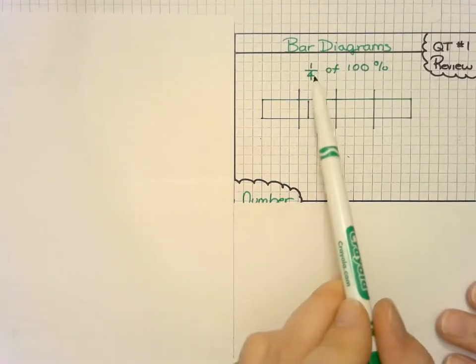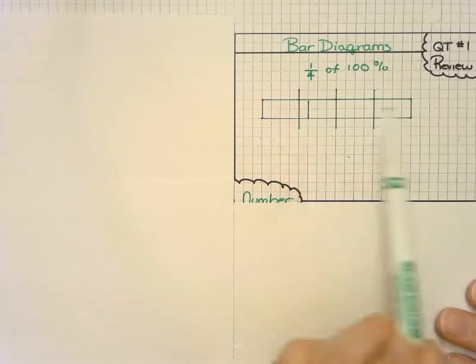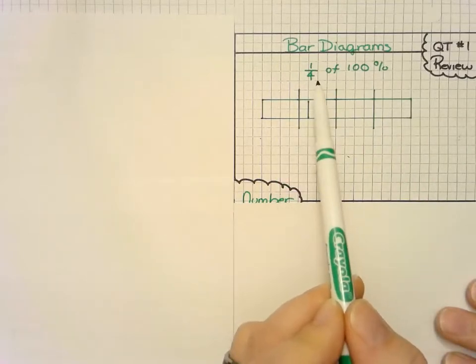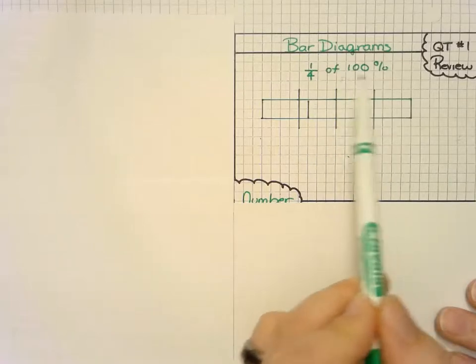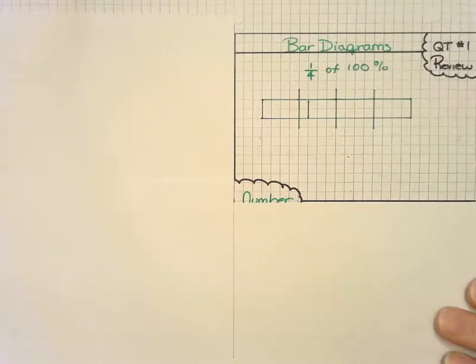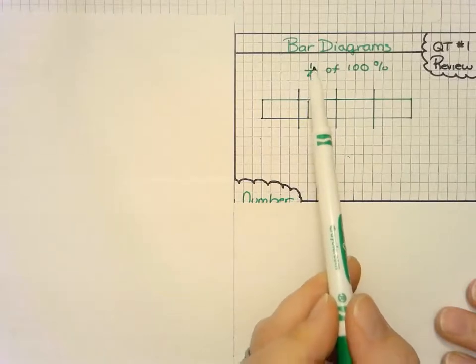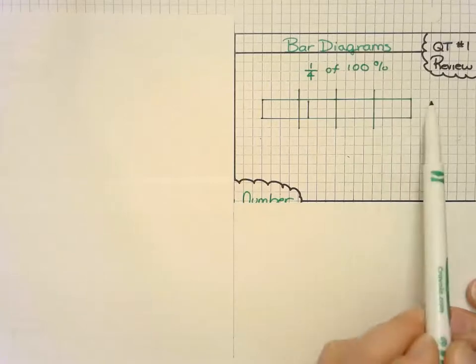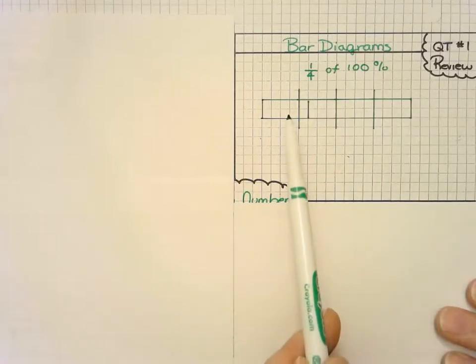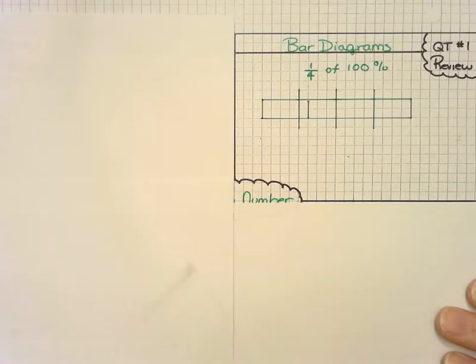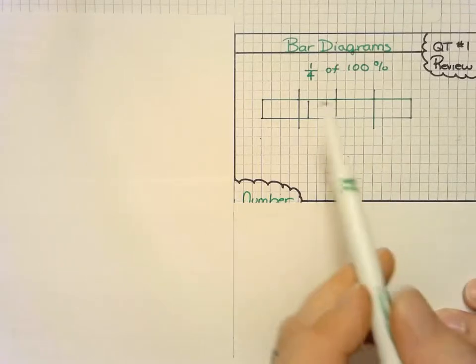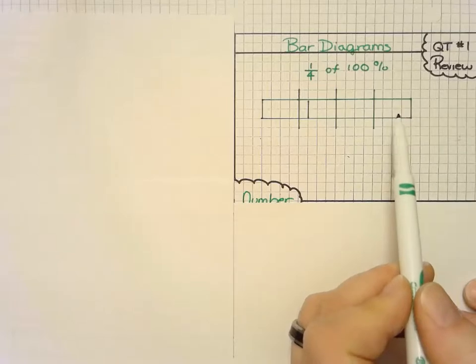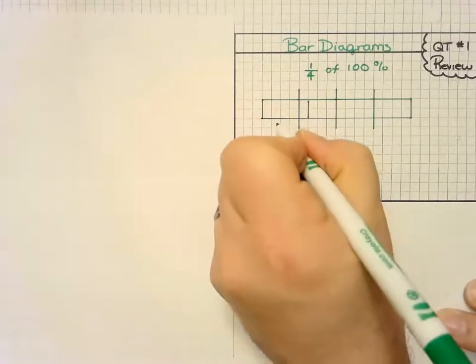In prior learning, we've discussed how to use bar diagrams to find the amount or the partial amount of a total. So if we took one-fourth of 100%, we can take a full bar, which counts as 100%, and divide it into four equal sections. So what does each section of the bar represent? It represents 25%.